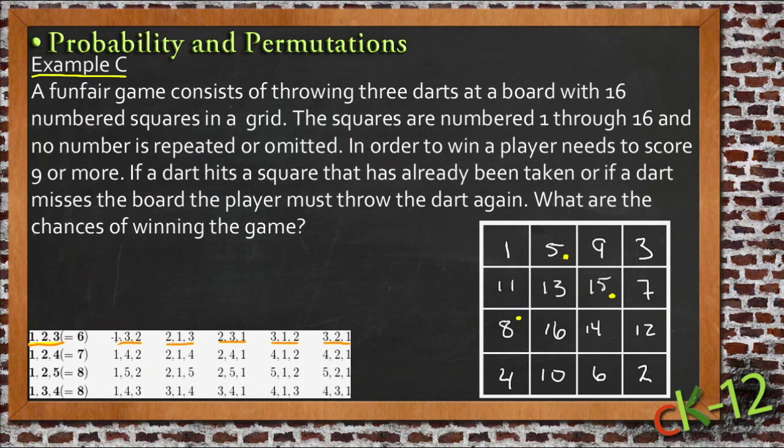So all those ways would only add up to six points, which is less than nine. Or you could throw a one, a two, and a four and you get seven points.